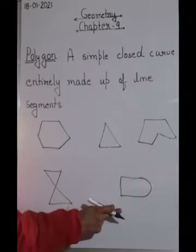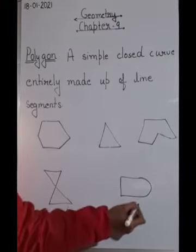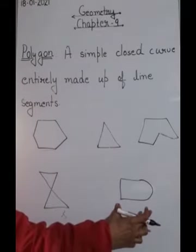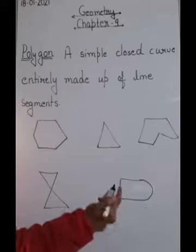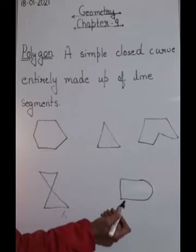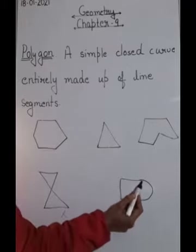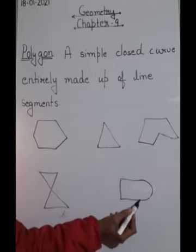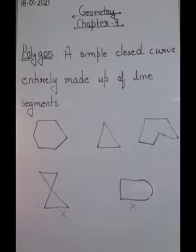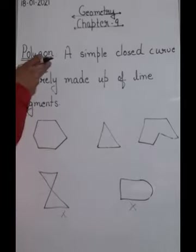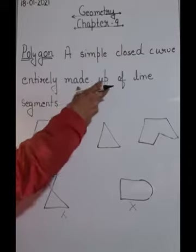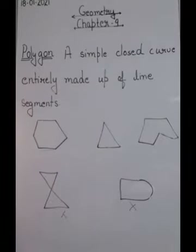Now look at this one. It is a simple curve, yes, and it is a closed curve, yes, but is it entirely made up of line segments? No. This is a line segment, this one is also a line segment, this is a line segment, but here you have a curve instead of a line segment. So this is not a polygon. A polygon must be a simple closed curve entirely made up of line segments.